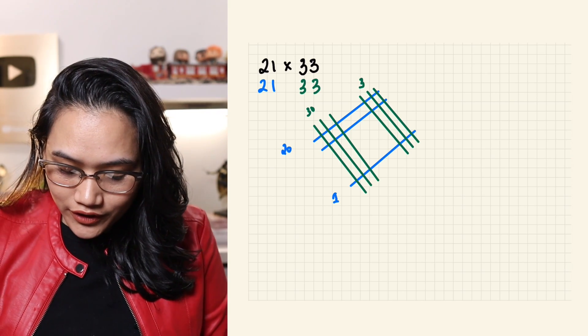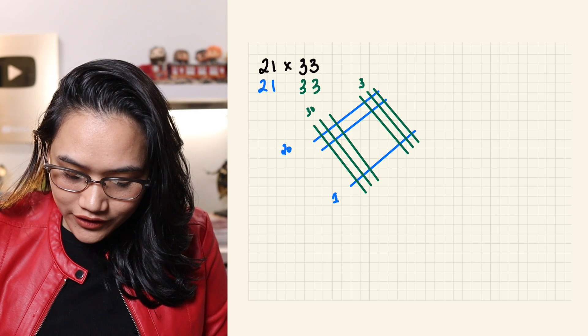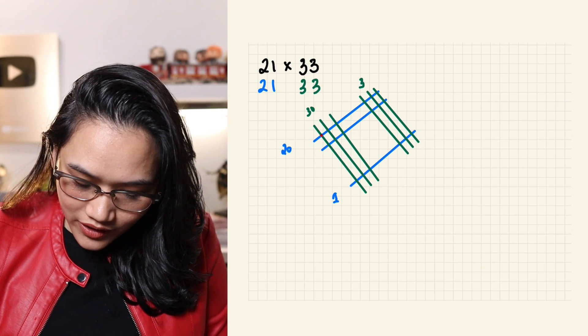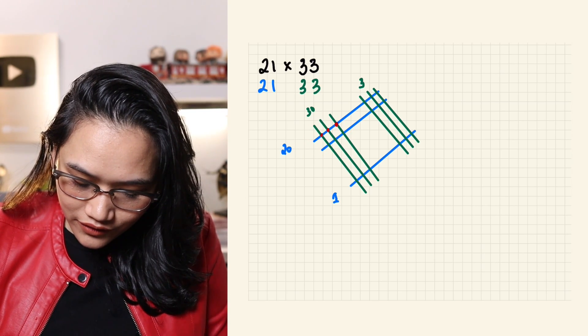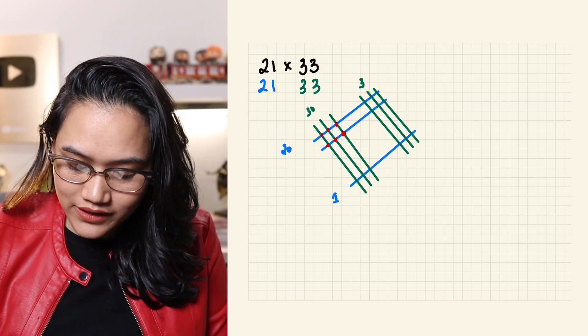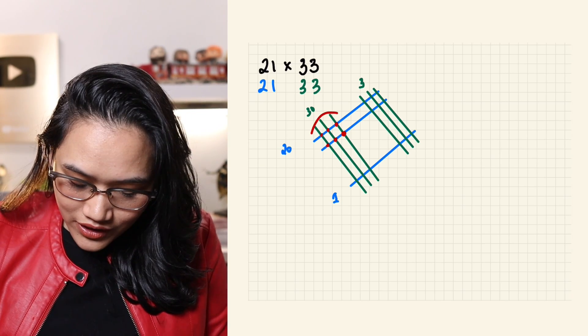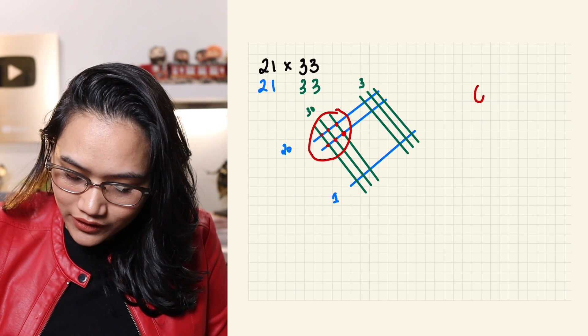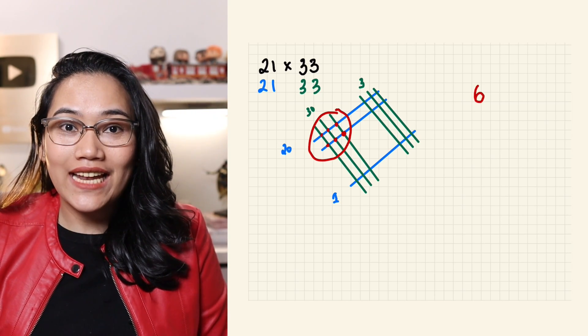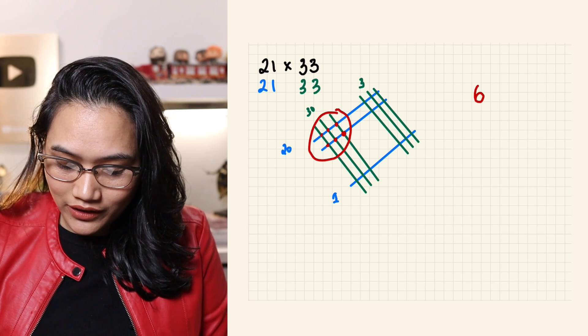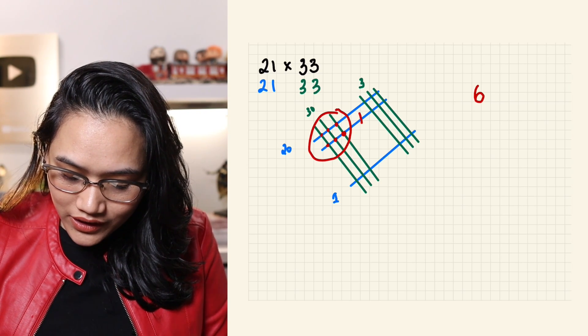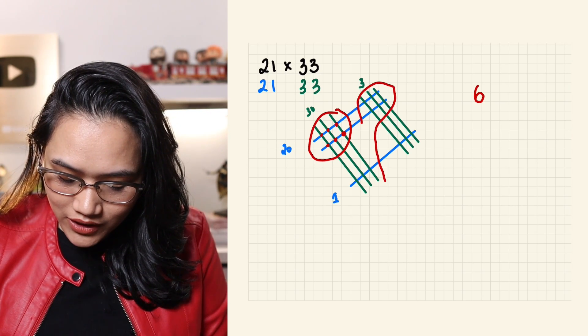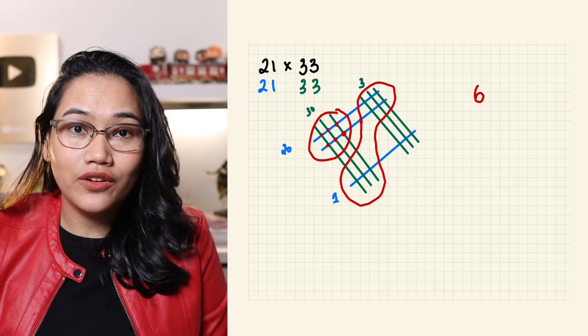First corner, which is right here, we have 1, 2, 3, 4, 5, 6 intersections. This right here represents the first number in our answer. Now, the next part is going to be this: this part plus this part, the middle part.